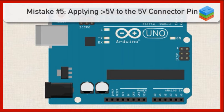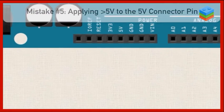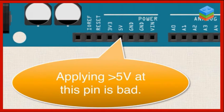The final way that you can have a bad day with your Arduino is if you apply greater than 5 volts to the 5-volt pin on the Arduino. Now you might be wondering, why would I ever put greater than 5 volts on that 5-volt pin? That just doesn't make sense. And you're right, it doesn't make sense. You wouldn't normally do that.